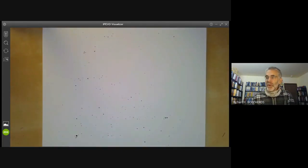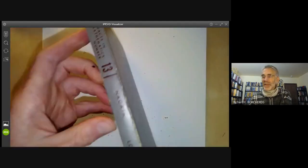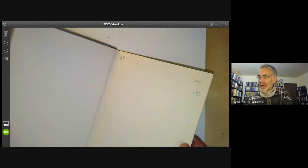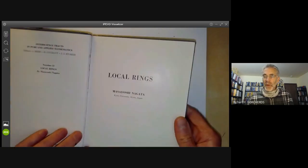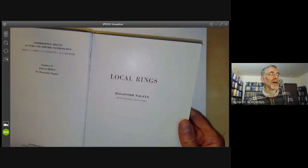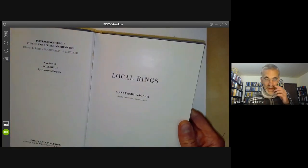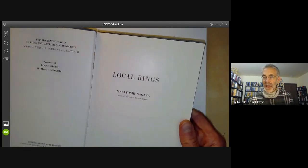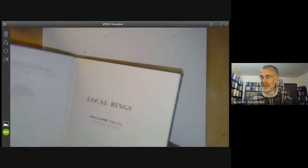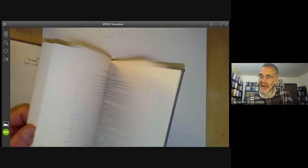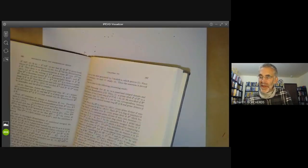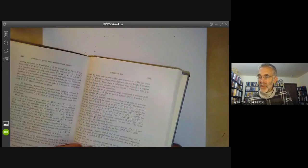Then there's an old book by Nagata on local rings. This again contains mostly somewhat more advanced topics and is particularly notorious because it's got this appendix at the end, which contains various examples of awful rings.